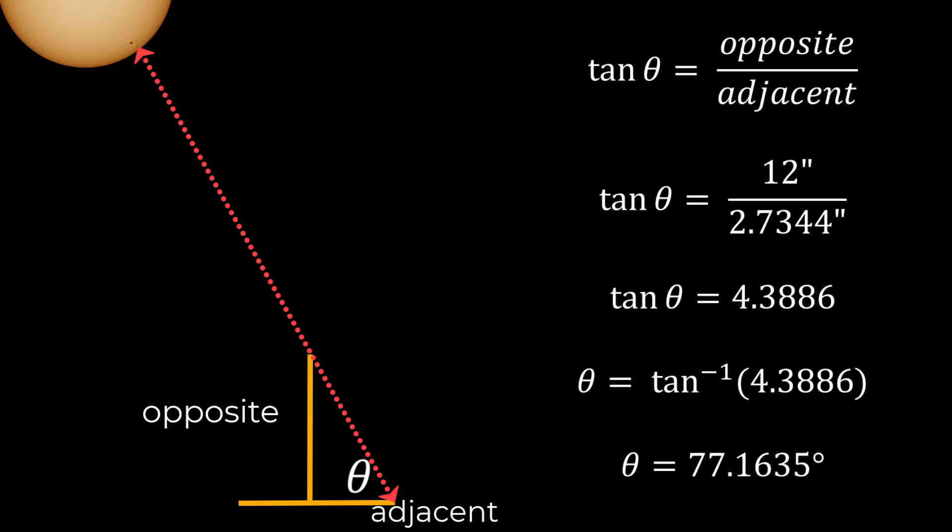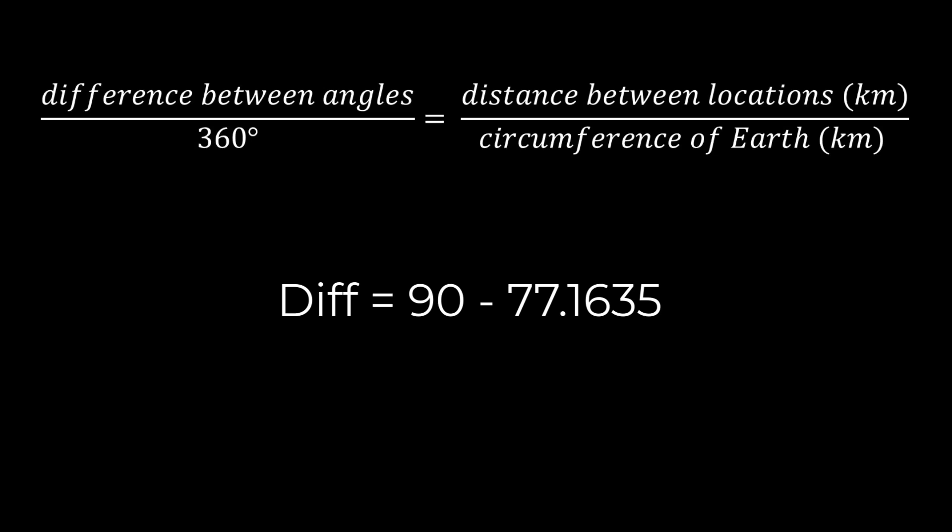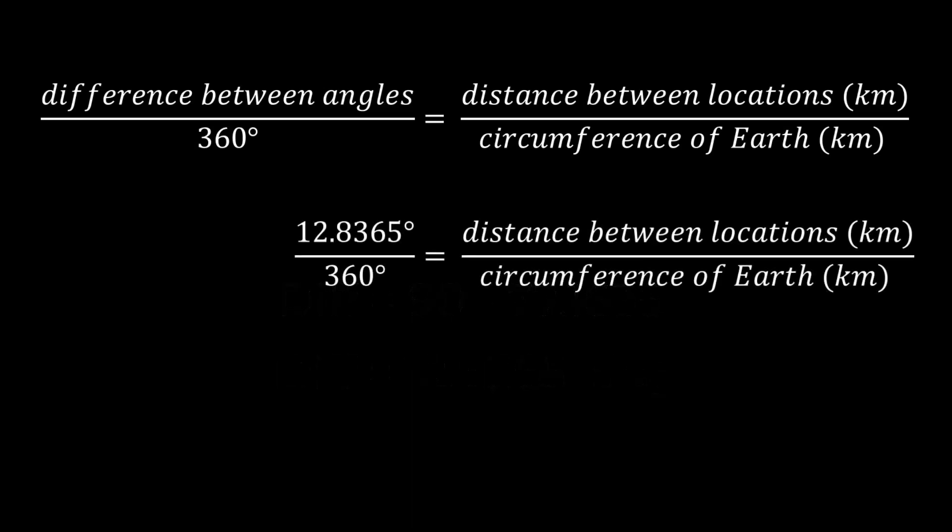Let's take that measurement and head back to our proportion and put it to use. Remember that our proportion calls for the difference between the sun's altitude at the two different locations so that means the difference is actually going to be 90 minus what we just calculated which gives us 12.8365. Plug that in and now we need to know the distance between our two observing locations.